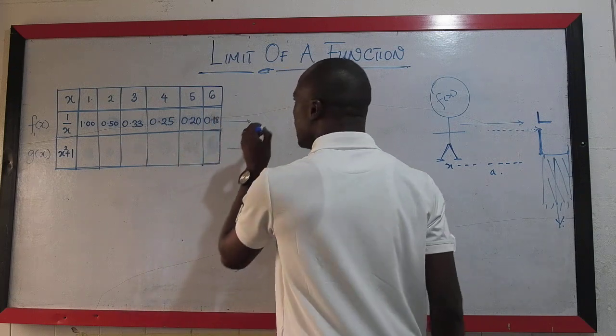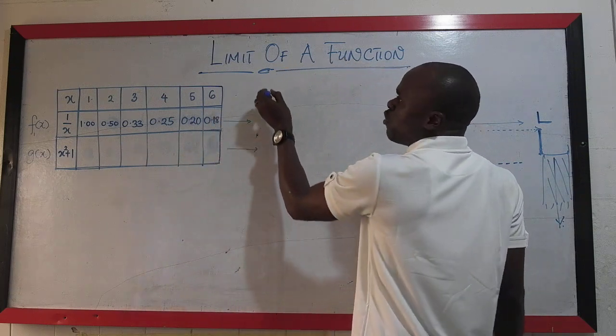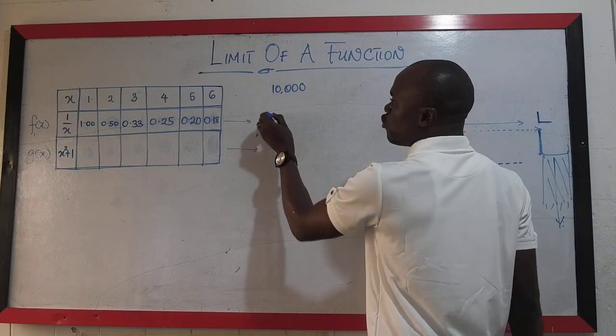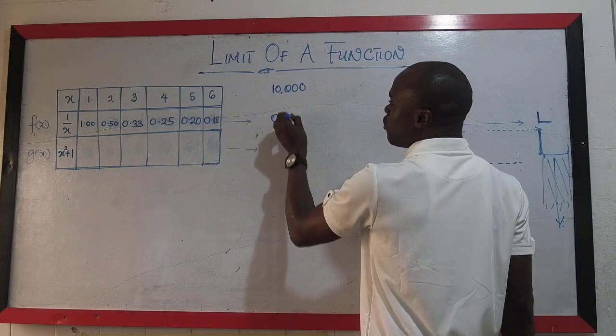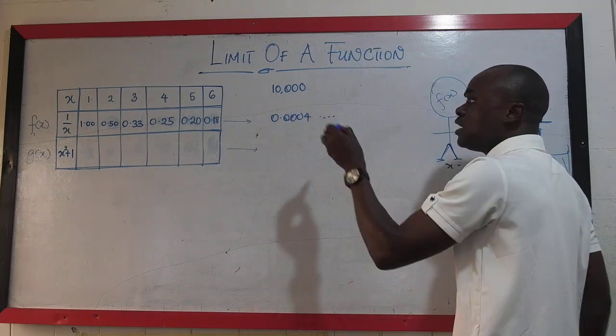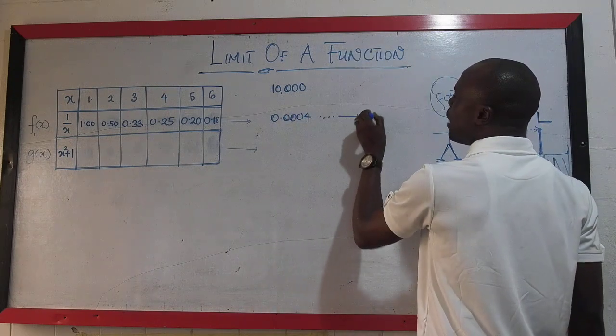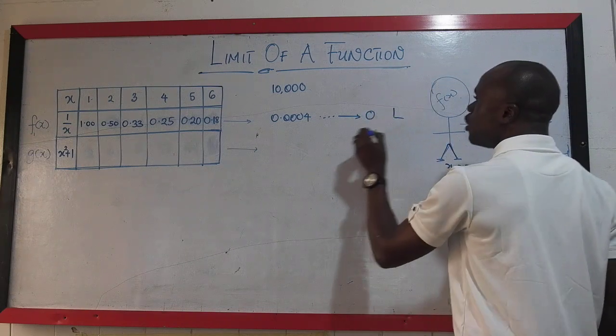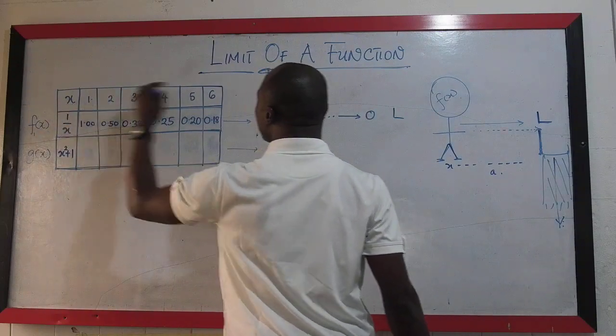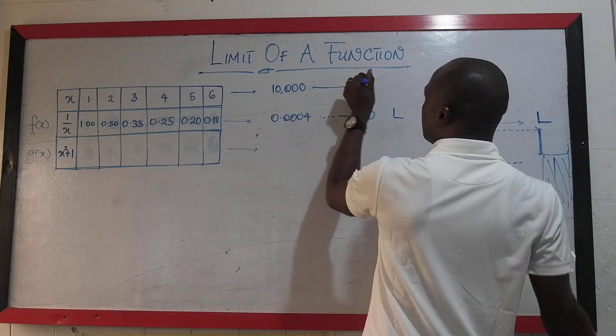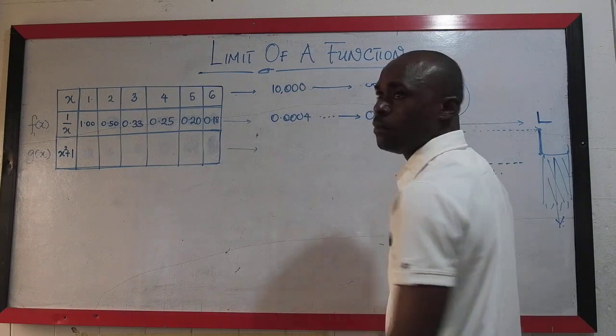You see, if you continue this way, definitely you'll probably get to a number like, let's imagine, 10,000. You are going to have 0.0004. If you continue that way till a very large number, you will see that we are approaching 0. That 0 is what we refer to as the limit of this function as this x approaches, approaches what? Probably infinity because it is a very large number.